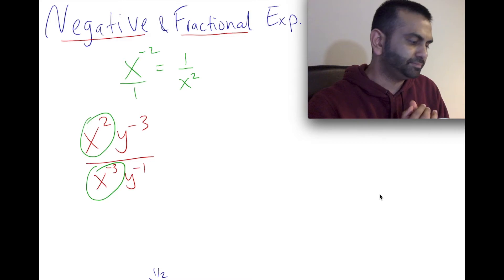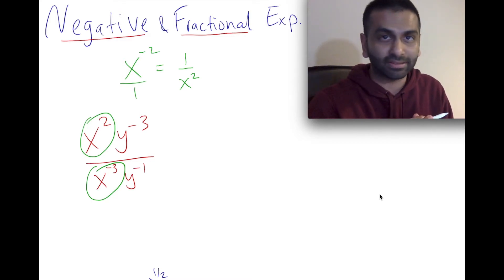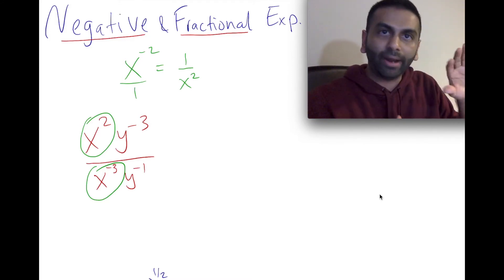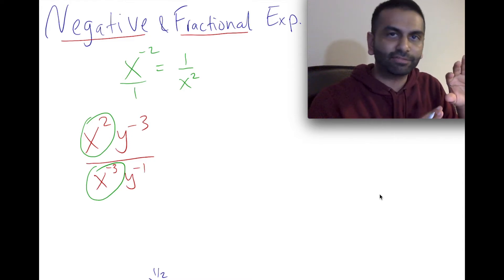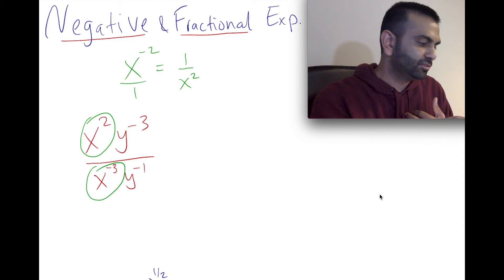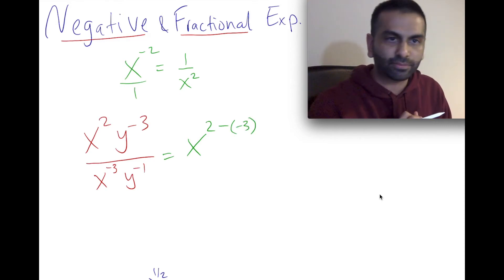Now you can think about it in a couple of different ways, but the easiest way is probably just to think about it this way, where here overall, you're basically divided. You have x squared divided by x to the negative 3, and anytime you're dividing, you subtract exponents. So really, that's just going to be x, and the exponents here is just going to be 2 minus that negative 3. So that's 2 minus that bottom exponent of negative 3.